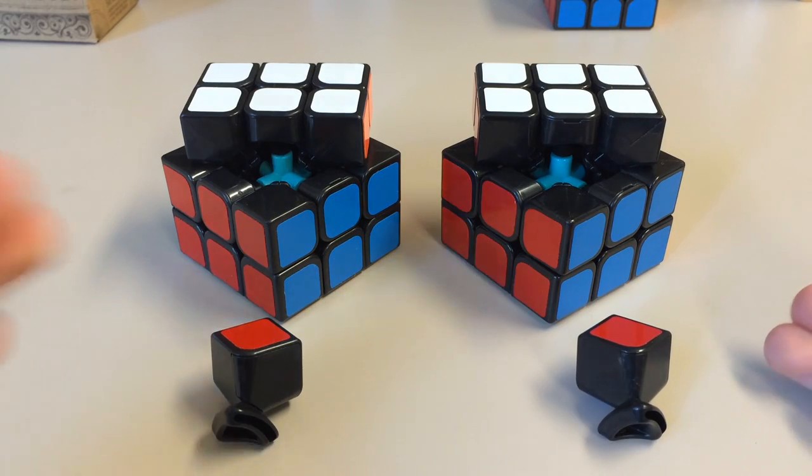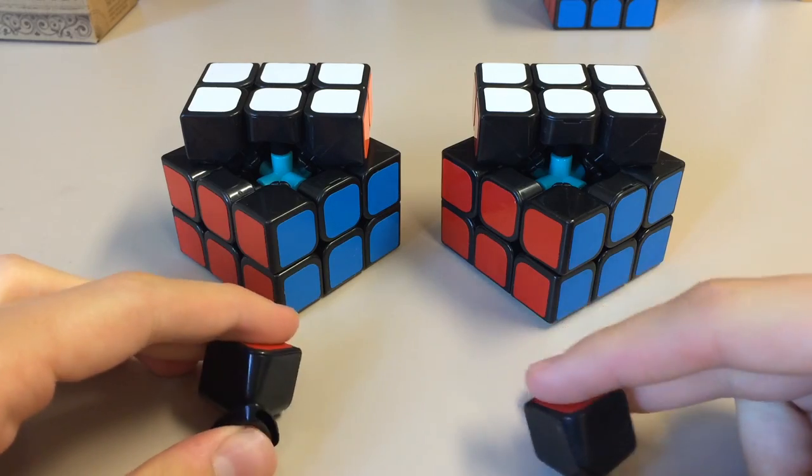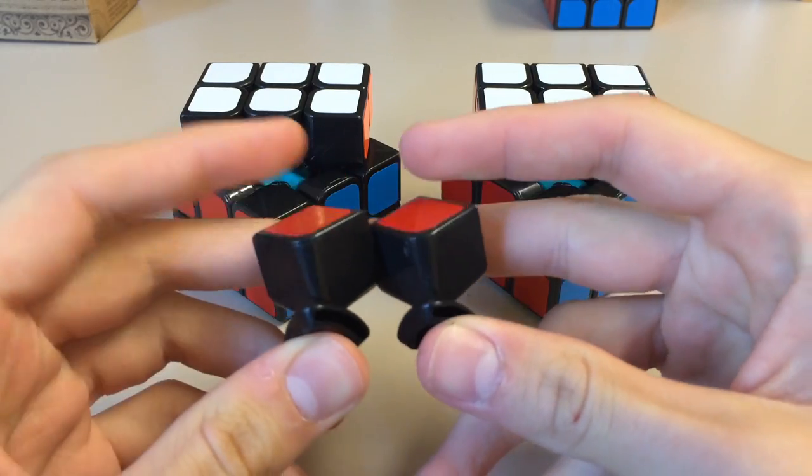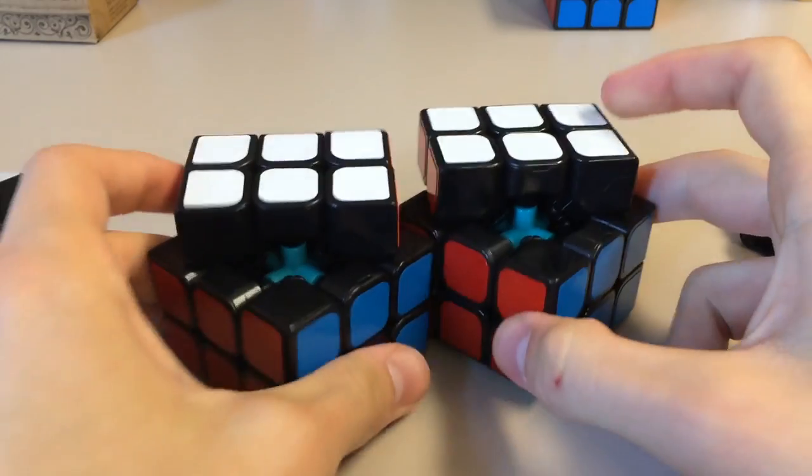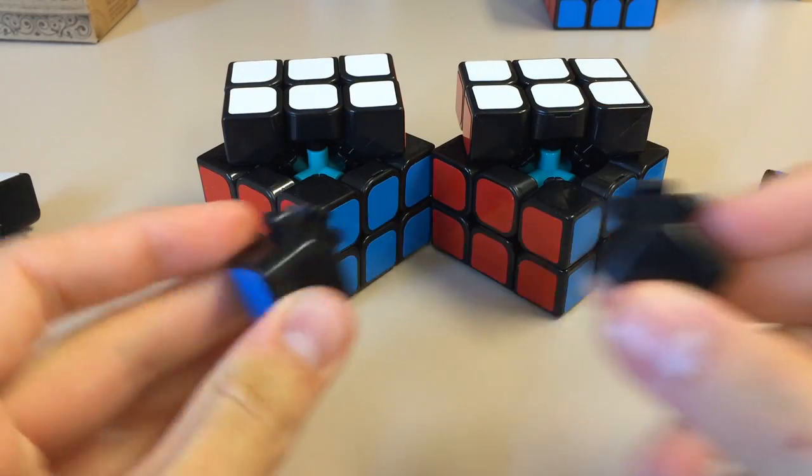All right, so on the right we have the guanlong, and on the left we have the cube. And looking at the corners, they are the exact same corner. Exact same core, exact same centerpiece, and we have the exact same edges.